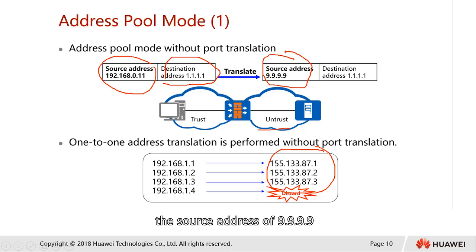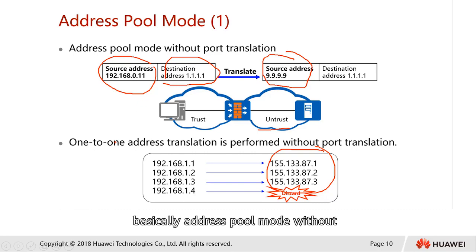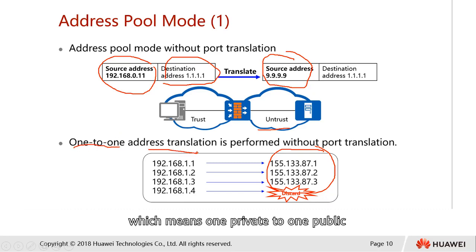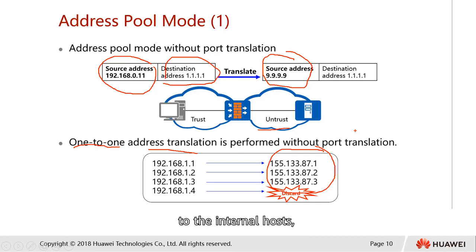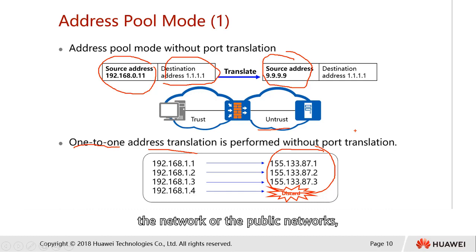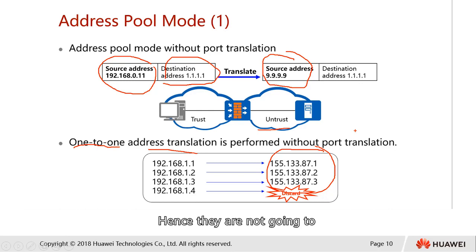The source address 9.9.9.9 is part of the pool. Address pool mode without port translation is going to perform one-to-one address translation — one private to one public — and this doesn't involve any port number. If the pool runs out of public IPs, then any subsequent internal hosts trying to access public networks will not be able to be translated and hence cannot communicate externally.